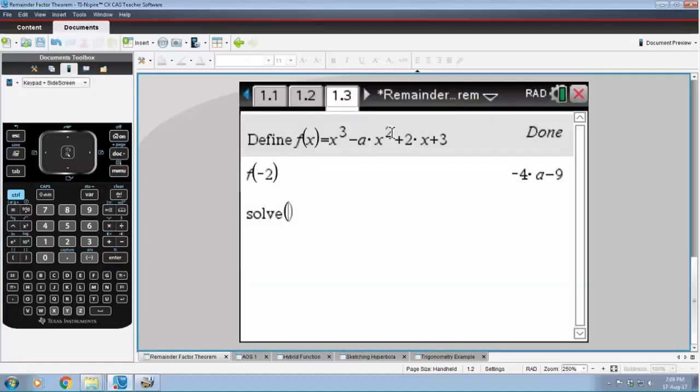Now we could type that whole equation in. It's probably easier just to press the up arrow key twice, grab that and press enter. Say that equals to 3 and solve that equation for A. And that'll give me the solution then that A is minus 3. So that's a nice little quick way of doing questions like this when we do remainder theorems and factor theorems as well.